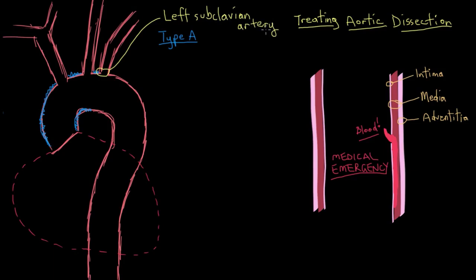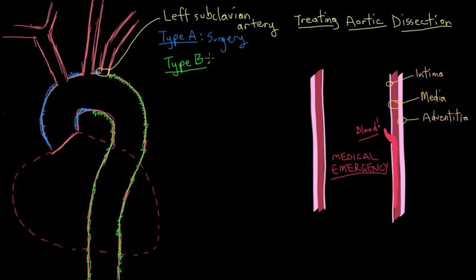Type A dissections pretty much always have to undergo surgery, because treatment with just medication has a high rate of mortality. Type B dissections can be managed a bit differently. Type B dissections are when you get a tear between the intima and the media at any point in the aorta after the left subclavian artery. These can often be managed medically — just with medications and no surgery — unless the patient develops complications that require more intervention, like surgery.